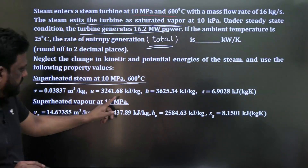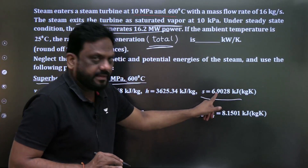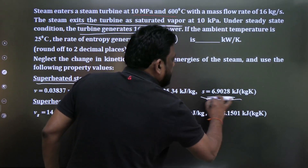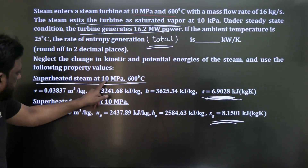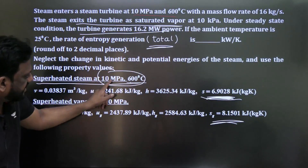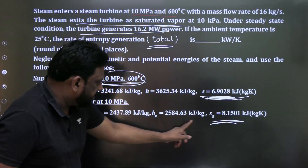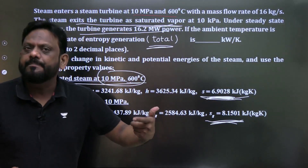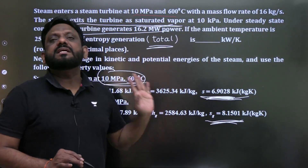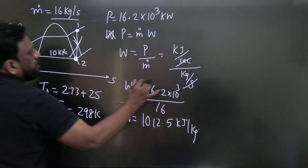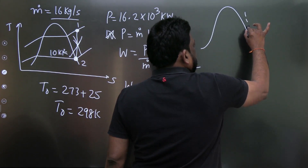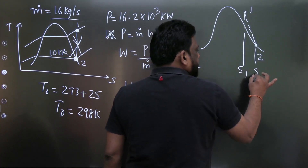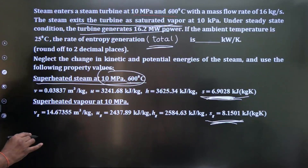It is definitely not reversible because the inlet entropy s1 is 6.9028 kJ/kg·K and the exit entropy s2, since it leaves as saturated vapor, is sg = 8.1501 kJ/kg·K. Since entropy increases, the process is irreversible, meaning it is something like a path that increases entropy from s1 to s2.